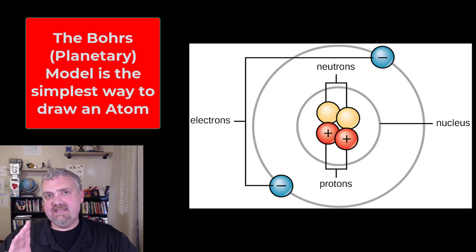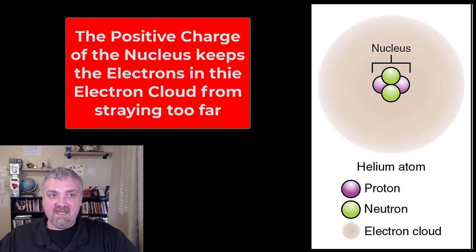They are whipping around the nucleus in a very erratic manner. We can only predict basically the vicinity that they're in, not exactly where they are. This is a great model, the simplest model to draw.